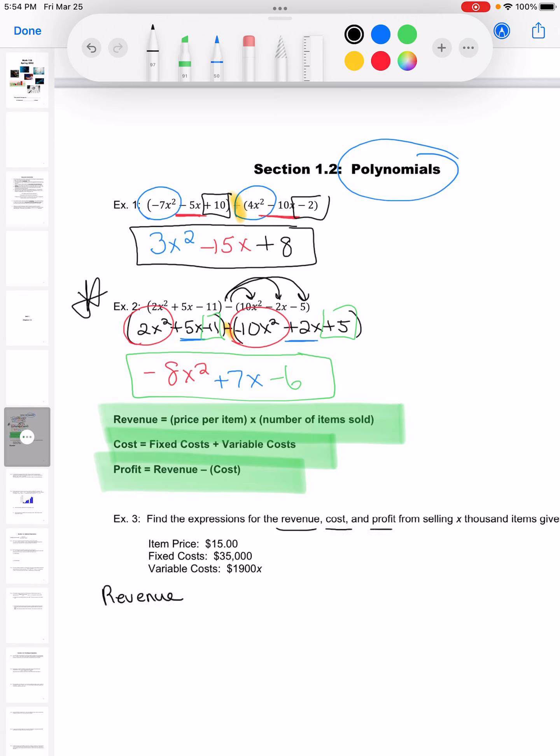So I'm going to start with the revenue. Up above in my directions, I said the revenue is the price per item times the number of items sold. So I've told you the price per item is 15, so I'm going to call this R for revenue.